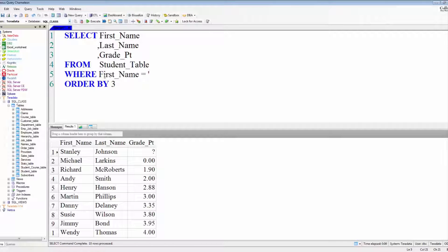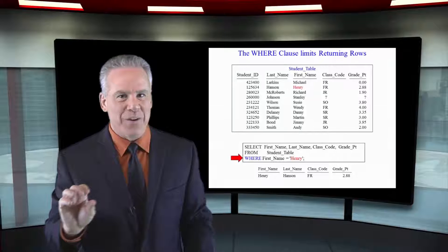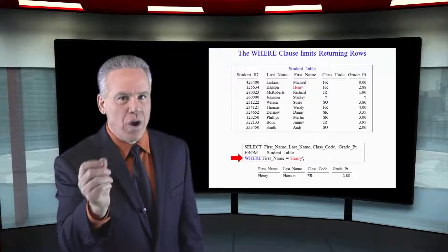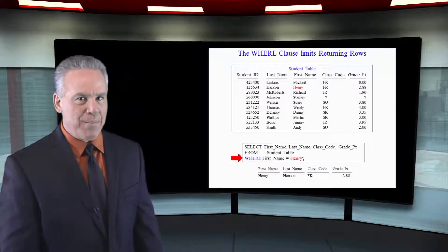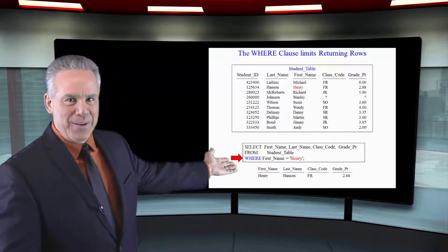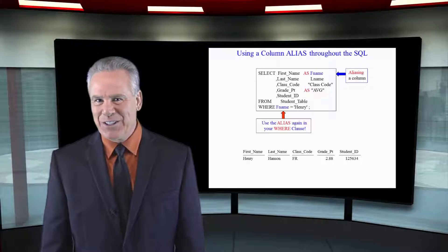The WHERE clause limits the rows coming back. As you can see here, we say WHERE first name equals 'Henry' — notice there's a single quote around Henry because that's character data, and only rows where the first name is Henry will come back.